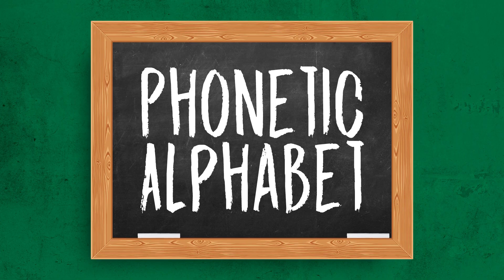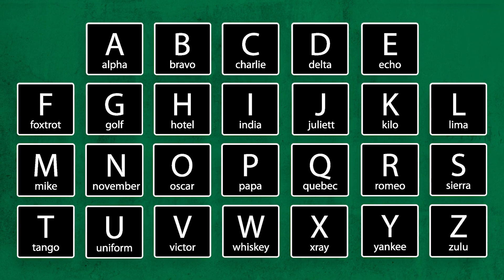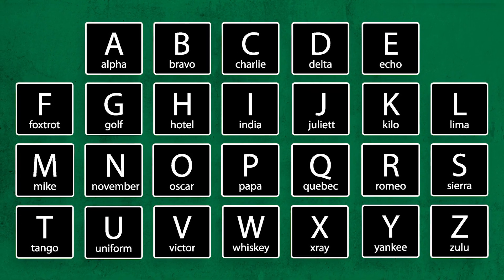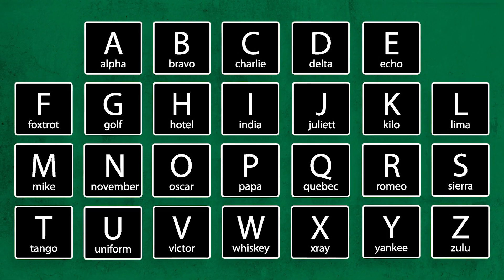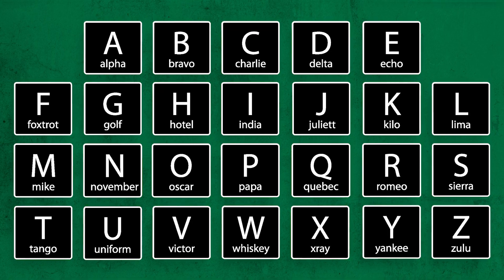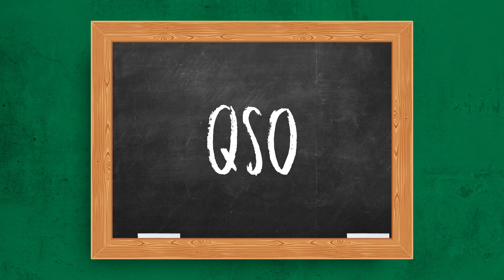Phonetic Alphabet. The phonetic alphabet is composed of standard words used on voice modes to make it easier to understand letters of the alphabet, such as those in call signs. For example, my call sign, W3AMG, stated phonetically would be Whiskey 3 Alpha Mike Golf. QSO. A QSO is simply a conversation between two amateurs. A highly active ham radio operator will have many QSOs on a given day.